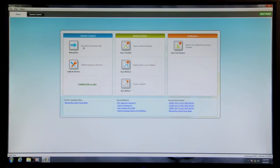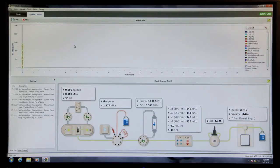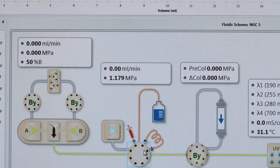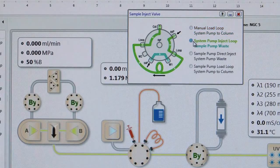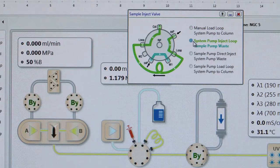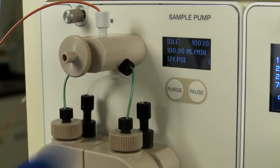Launch ChromeLab software and select Manual Run in the home screen. Double-click the Inject Valve icon. On the Inject Valve faceplate, select System Pump Inject Loop. Then, press the purge button on the sample pump faceplate.